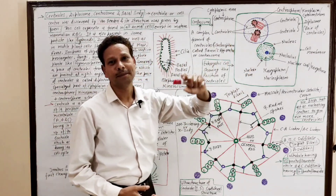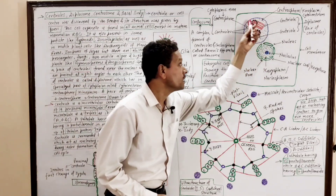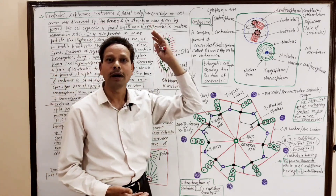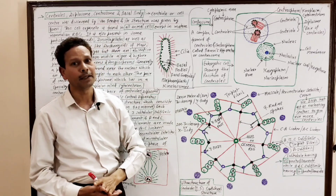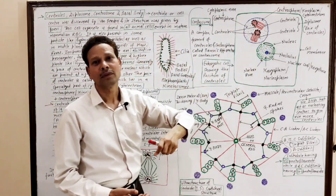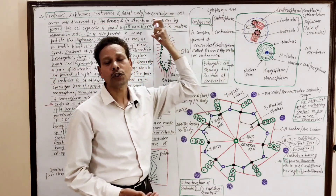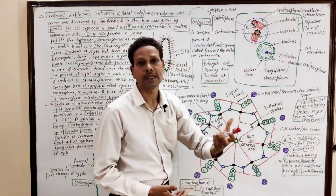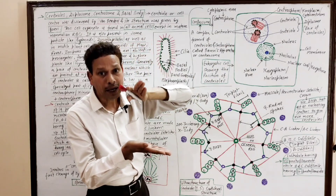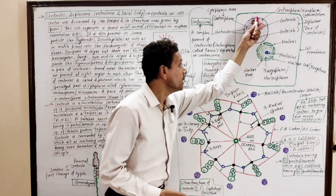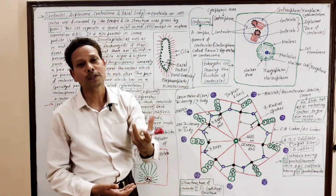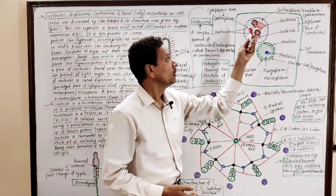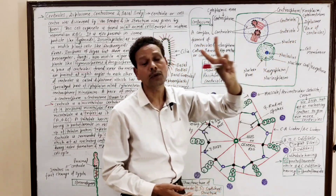The centrioles are a pair of cell organelles. As the name indicates, centriole means the cell center, a term coined by von Banden. These cell organelles lie at right angles to each other and are surrounded by a part of cytoplasm which is without any other cell organelles, called the centrosphere.